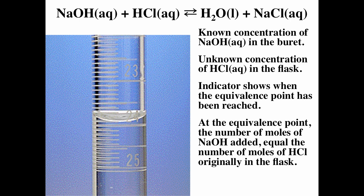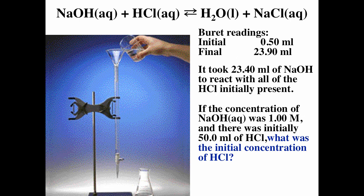When using a burette, always go to two decimal places — you have to estimate between the lines at the meniscus. In this case, the initial burette reading was 0.50 mL and the final reading was 23.90 mL, so it took 23.40 mL of sodium hydroxide to react with all the HCl initially present.